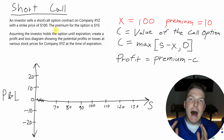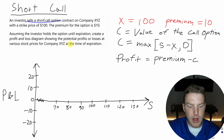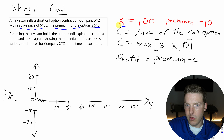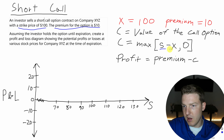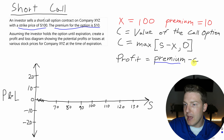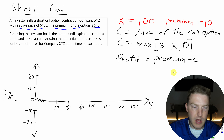Now let's draw a payoff diagram for the opposite side — the investor that sells a short call option contract. The strike price is still $100 and the premium received is $10. The value of the call option is still C equals max(S minus 100, 0). But the profit to the short side is the premium minus the value of the call — the reverse of the long side. Whatever one side of the contract loses, the other side gains.